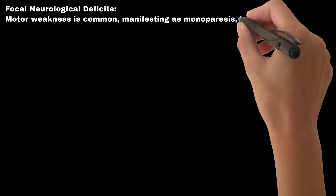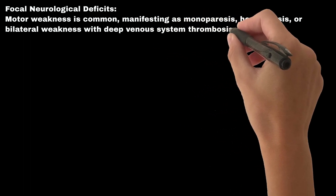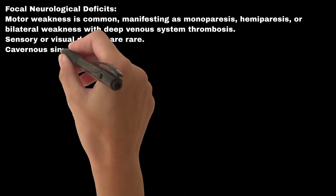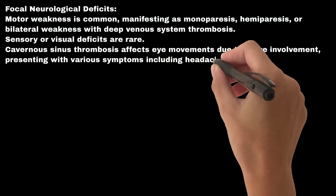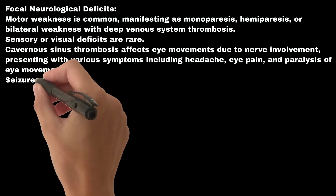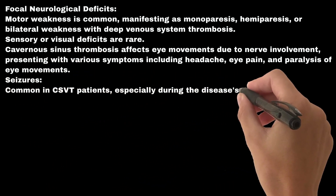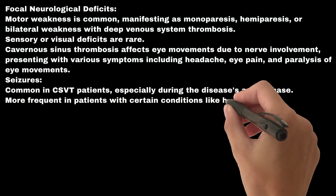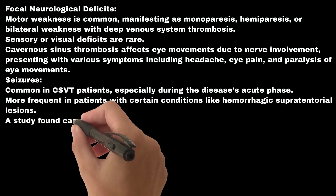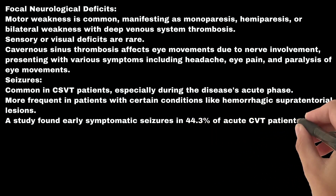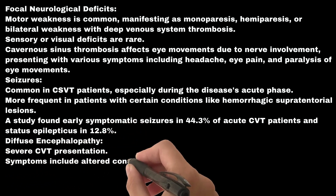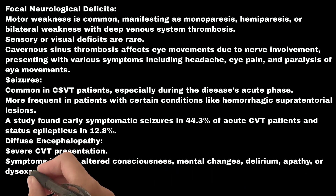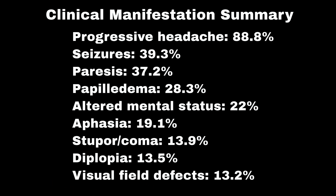Focal neurological deficits include motor weakness manifesting as monoparesis, hemiparesis, or bilateral weakness with deep venous system thrombosis. Sensory or visual deficits are rare. Cavernous sinus thrombosis affects eye movements due to nerve involvement, presenting with headache, eye pain, and paralysis of eye movements. Seizures are common in CSVT patients especially during the acute phase, with early symptomatic seizures found in 44.3% of acute CVT patients and status epilepticus in 12.8%. Severe CVT can present as diffuse encephalopathy with altered consciousness, mental changes, delirium, apathy, or disexecutive symptoms, which is more common in the elderly.